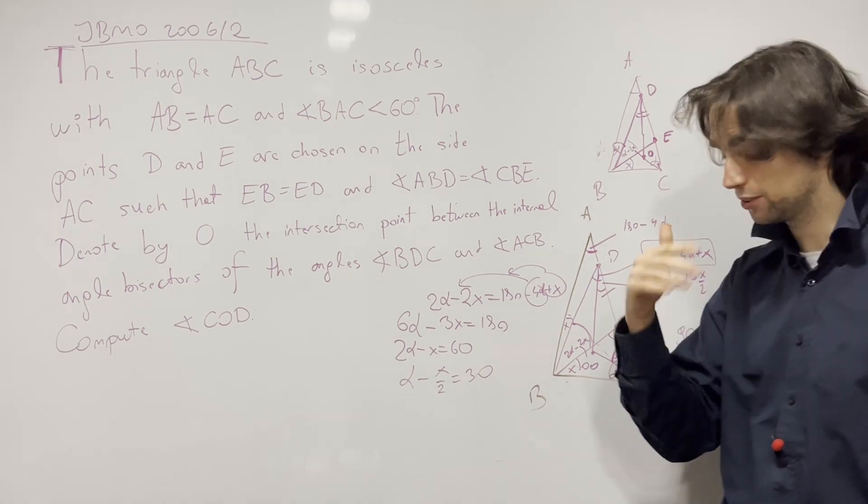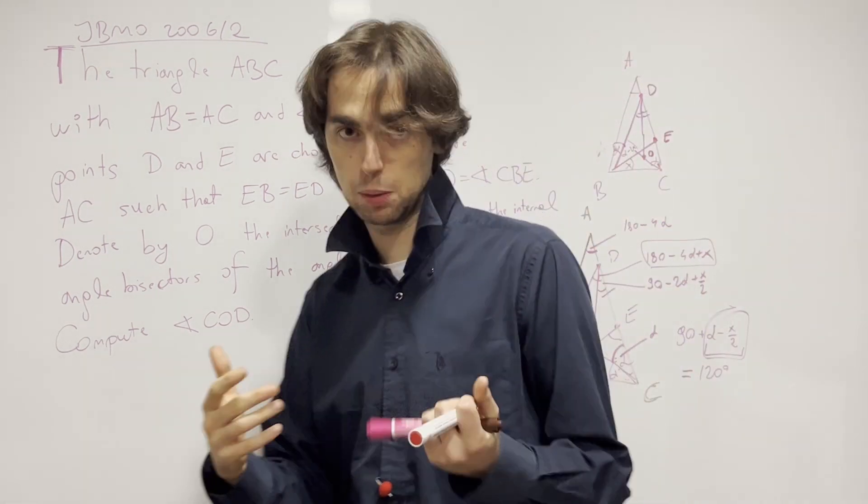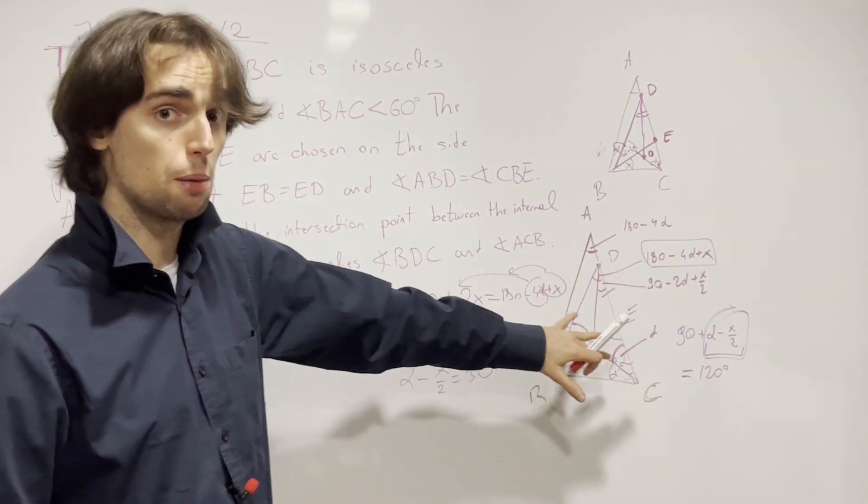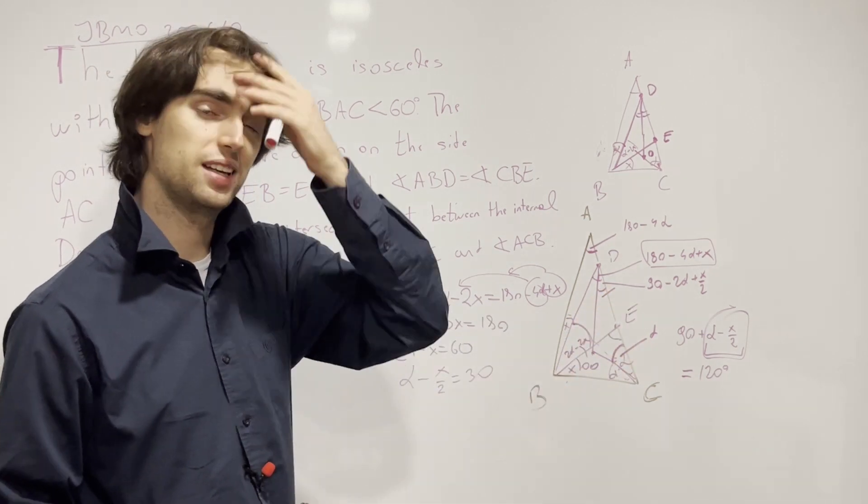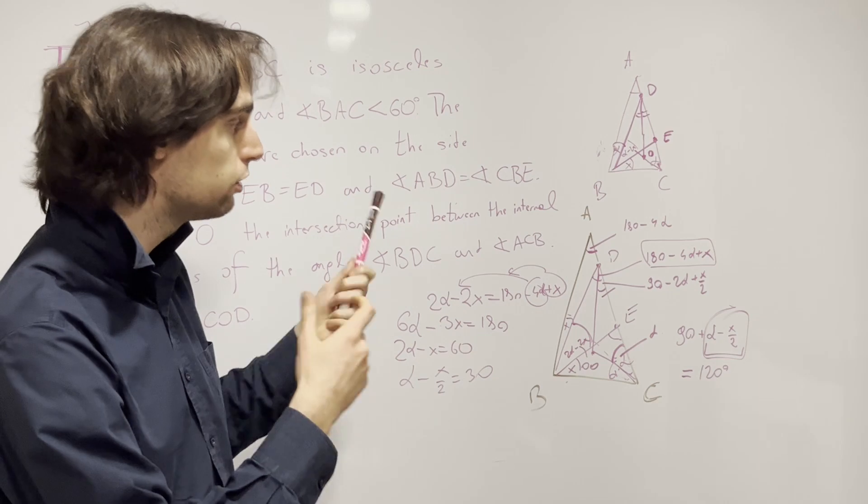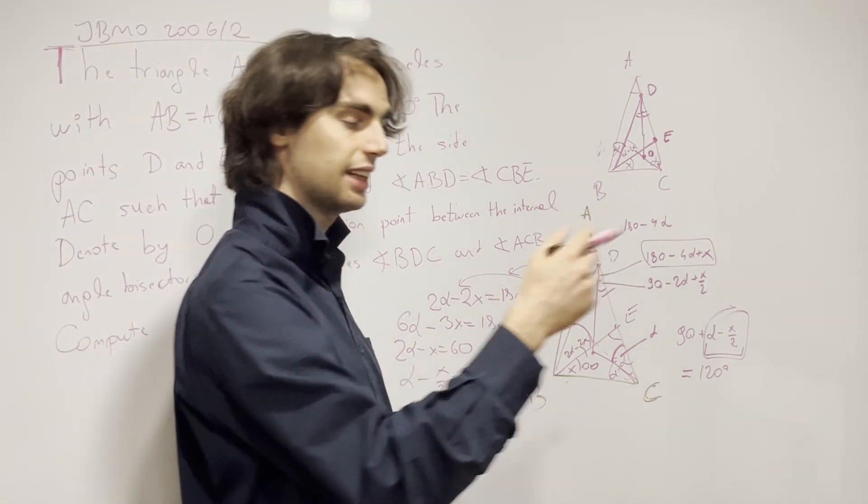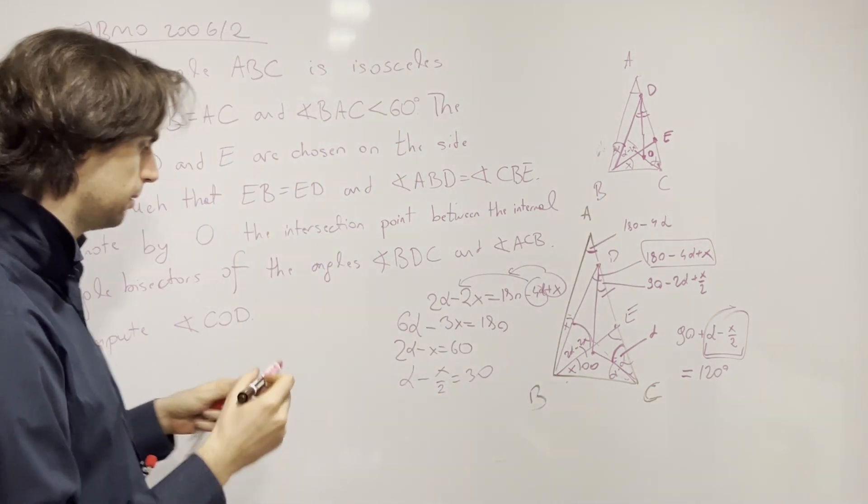Easy peasy. Why is this on the Junior Balkan Math Olympiad? It's just angle chasing. But you're wrong if you think that, because people did not get full credit if they didn't look at this case. What we've done now is we've solved half of the problem, maybe, but not the full problem. So we need to check whether that case can actually be possible.